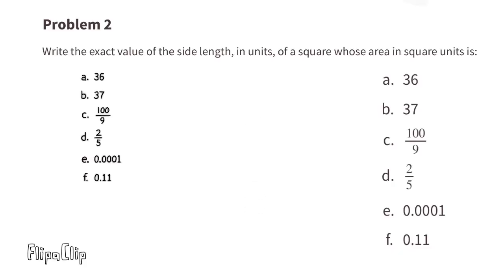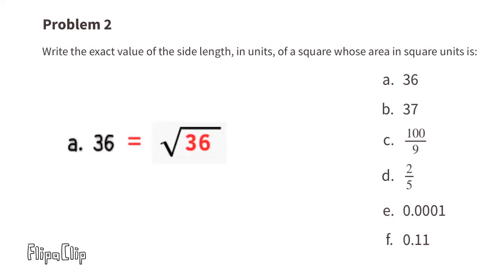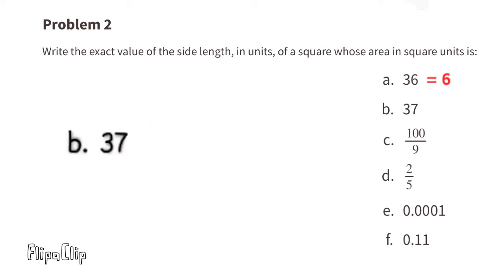Problem number two: write the exact value of the side length in units of a square whose area in square units is given. Part A: area is 36. The square root of 36 is 6, so each side length would be 6 units. Part B: area is 37. This one's not as easy because 6 times 6 is 36.